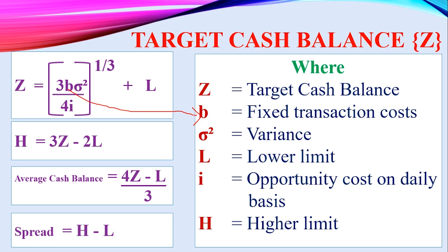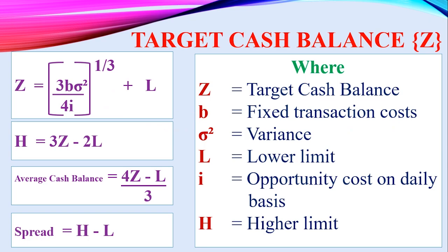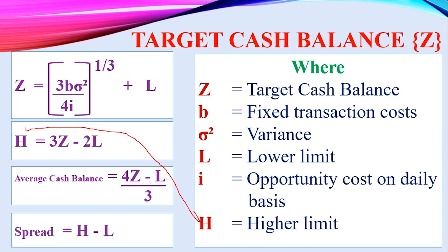B represents the fixed transaction costs when trading on the securities exchange — such as commissions paid to agents or brokers. Sigma squared (σ²) represents the variance of daily cash flows. Note that sigma (σ) alone represents the standard deviation, while sigma squared (σ²) is the variance. I represents the opportunity cost on a daily basis, given as a percentage — and it is very important that this is expressed on a daily basis. H is the upper limit — the maximum amount you can hold before buying marketable securities to return to Z.